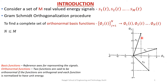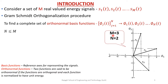Therefore these signals can be represented as a linear combination of φ1 and φ2. When you compare the number of signals and number of orthonormal axes, the number of signals M equals 3 and the number of orthonormal axes equals 2. Therefore N will always be less than or equal to M.